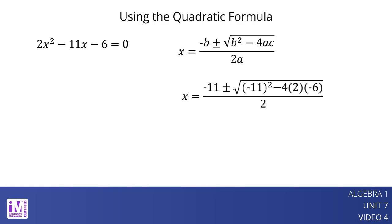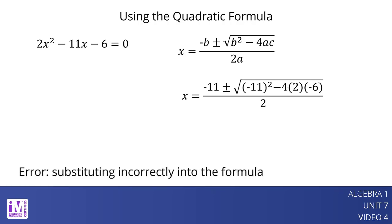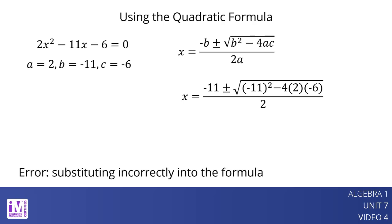What errors do you see? One error is understanding negative b. For this equation, a equals 2, b is negative 11, and c is negative 6. So negative b is the opposite of negative 11, or 11.